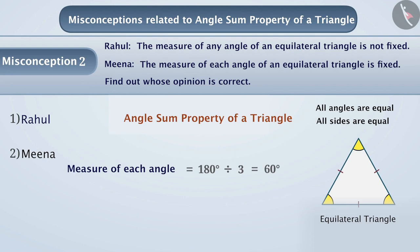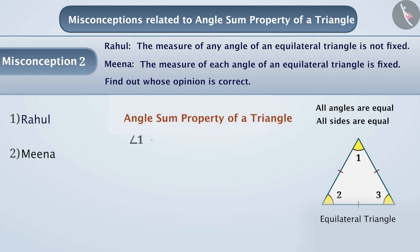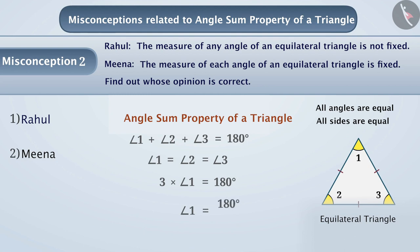Let us understand why this is correct. In an equilateral triangle with angles 1, 2, and 3, according to the angle sum property, angle 1 plus angle 2 plus angle 3 equals 180 degrees. Since all angles are equal in an equilateral triangle, we can write 3 multiplied by angle 1 equals 180 degrees. Therefore, angle 1 equals 180 degrees divided by 3, which equals 60 degrees. That is, angle 1 equals angle 2 equals angle 3 equals 60 degrees.